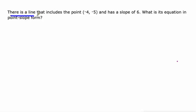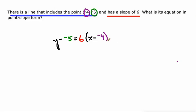Then we have a line that includes this point, (-4, 5), and it has a slope of 6. So we'll do y minus our y value, negative 5, equals slope 6 times x minus our x value, which is negative 4. And there's a couple of things we can clean up on this one.